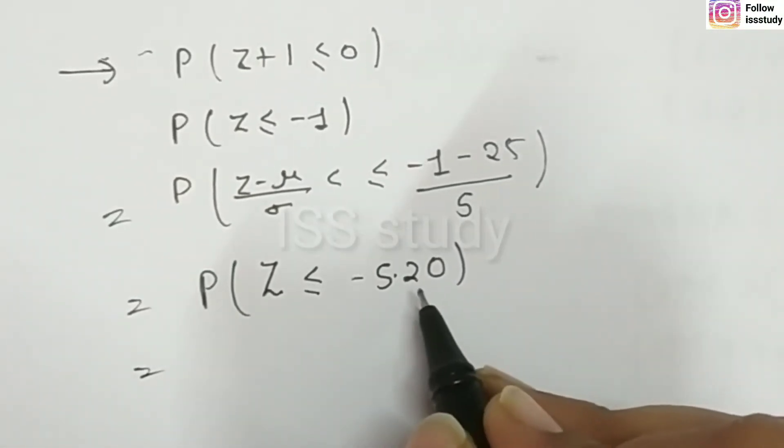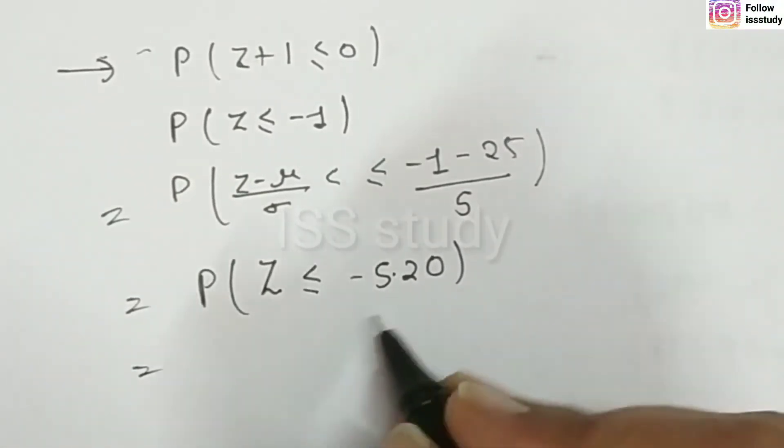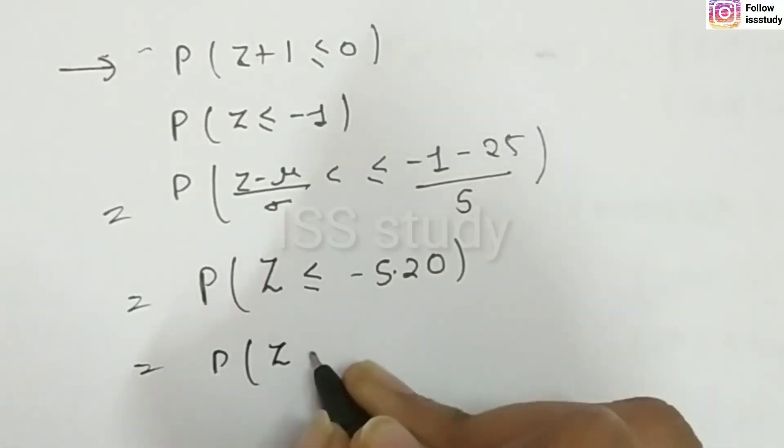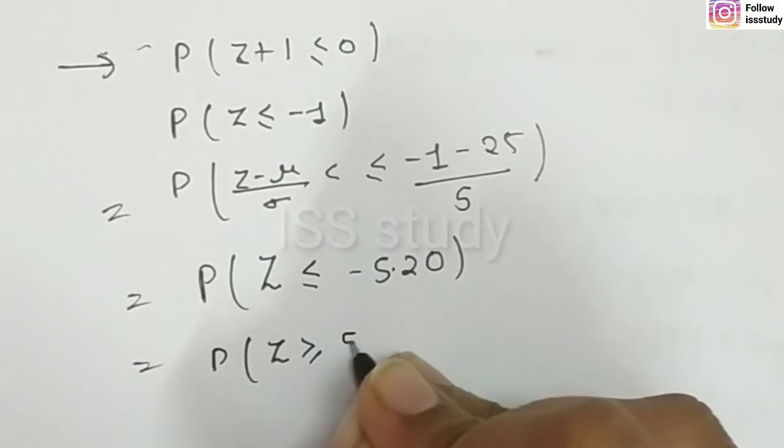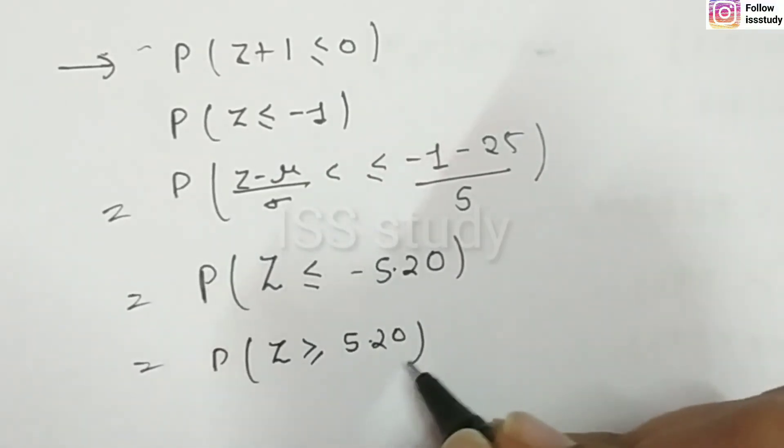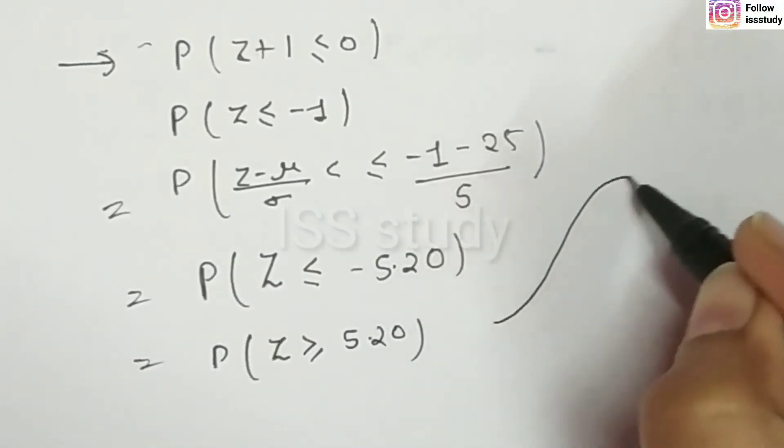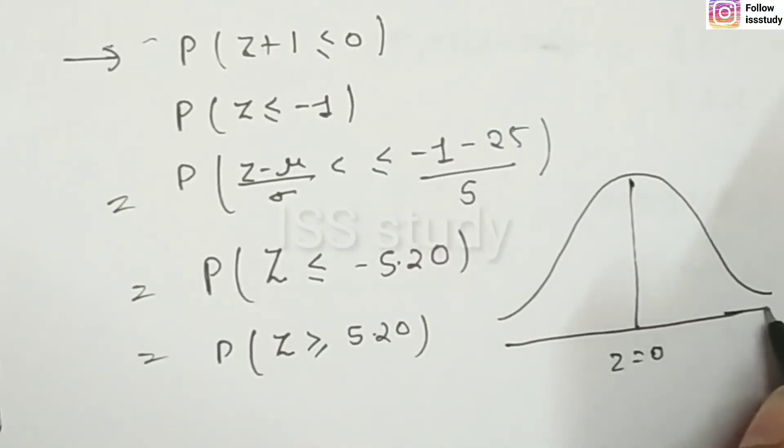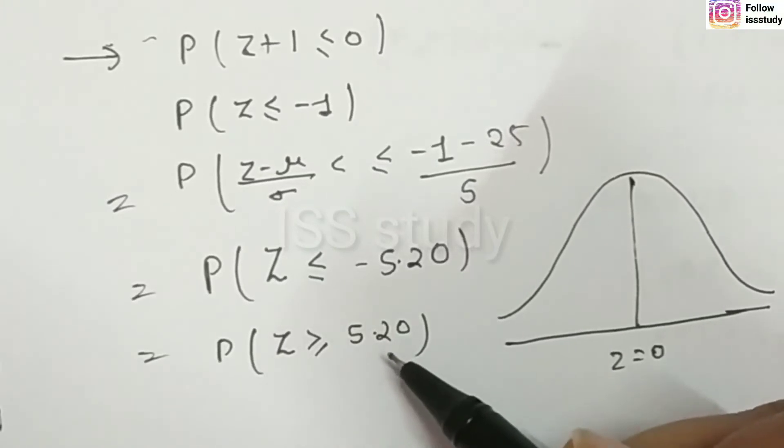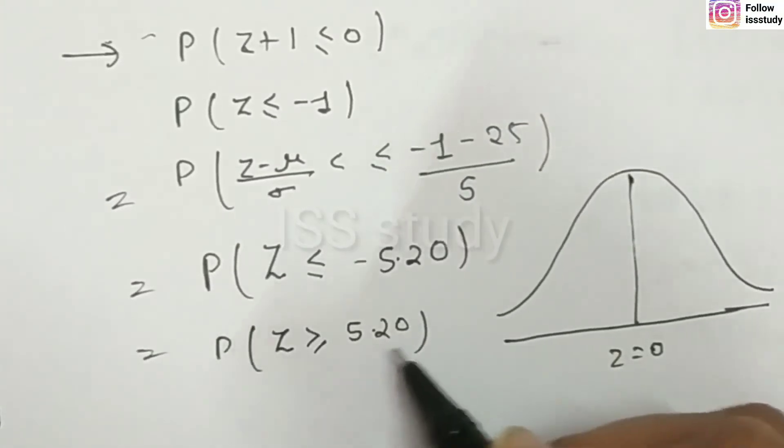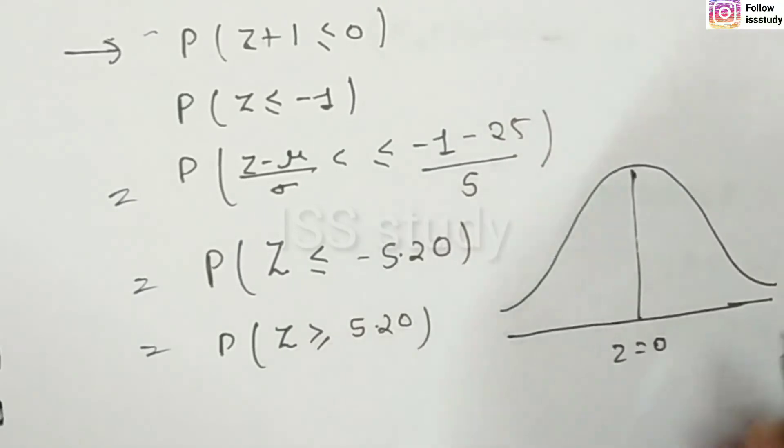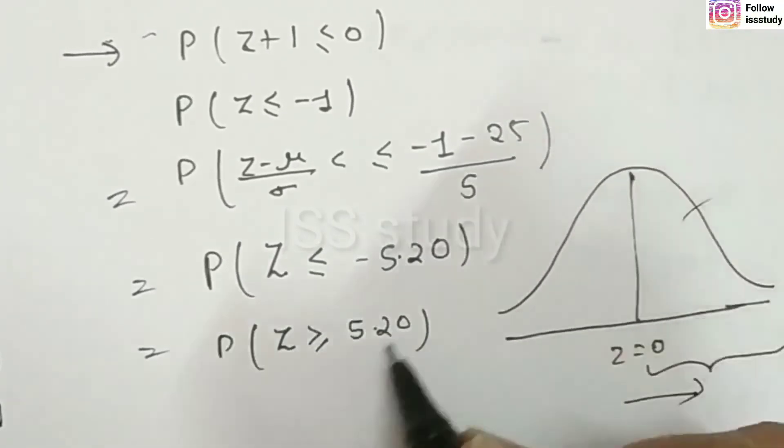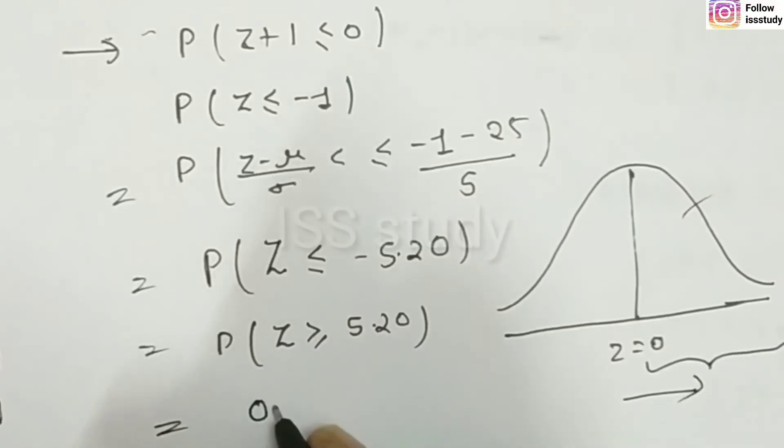What do you do? You can convert it. So, what do you do? We can say z is greater than equal to 5.20. But, you can see, 5.20 is a very big number. Because, you can see, here, this is equal to 0. And, the value of the table is given to us. We have 3.9 to the values. But, from 3.9, 5.20 is very big. This means, this will cover the entire area. This means, the final probability will be 0.50.